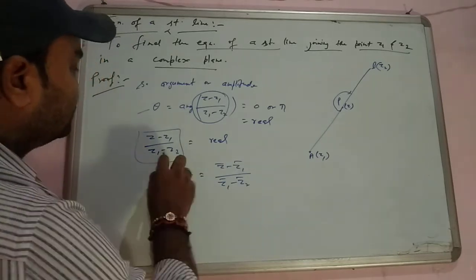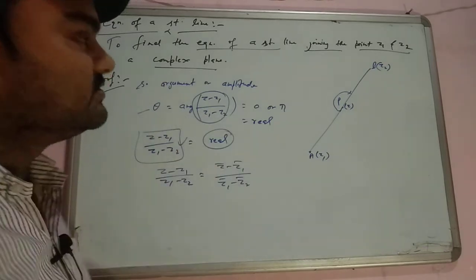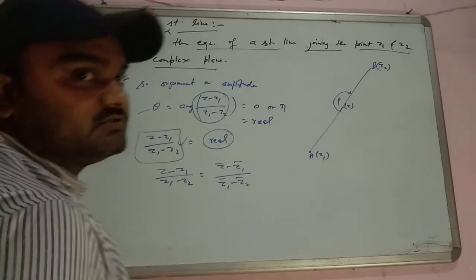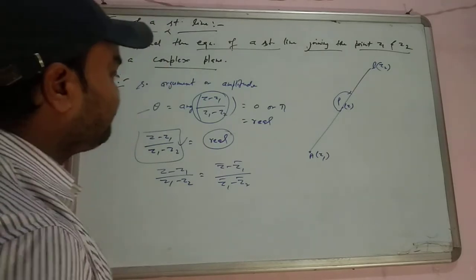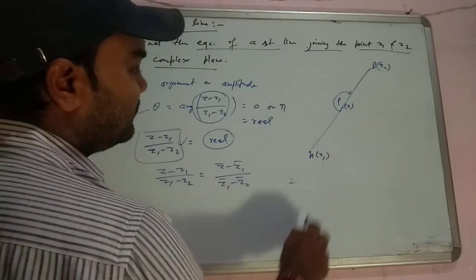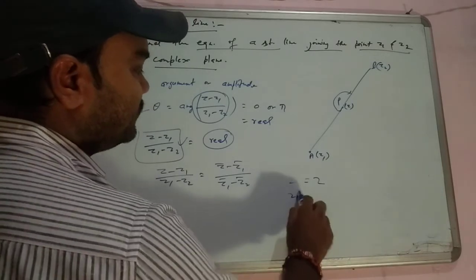Clear? Because this is a real quantity, and we know that every real quantity is the same as its conjugate. Like 2 has conjugate 2, but 2i has conjugate minus 2i.